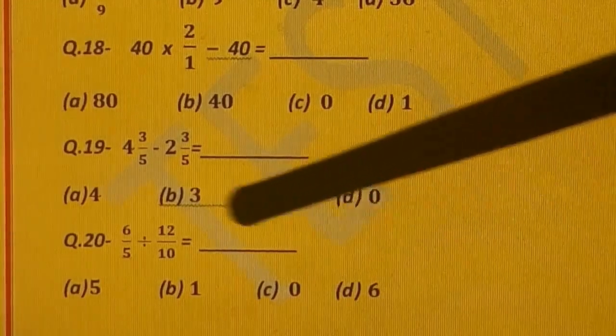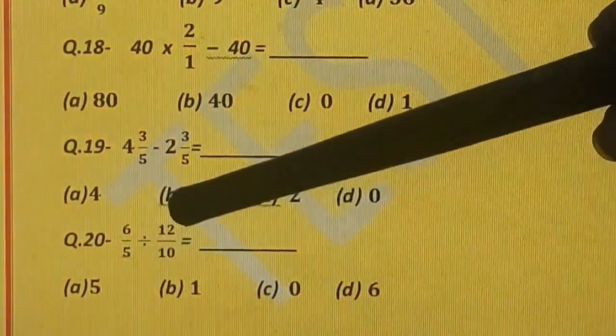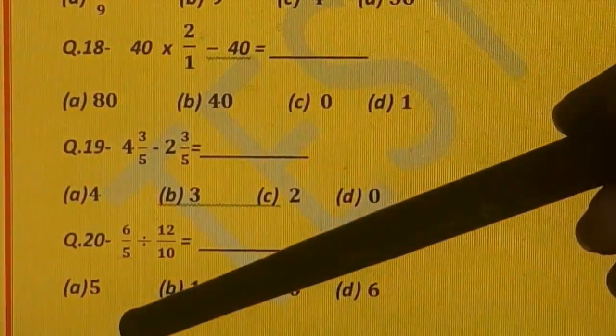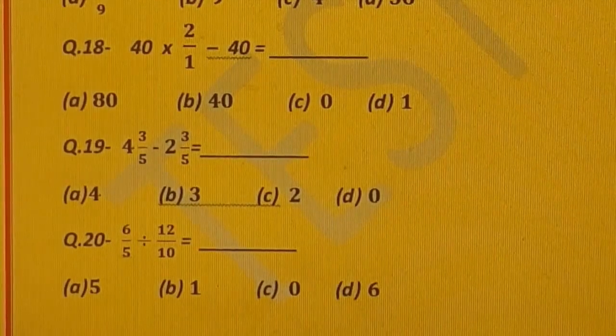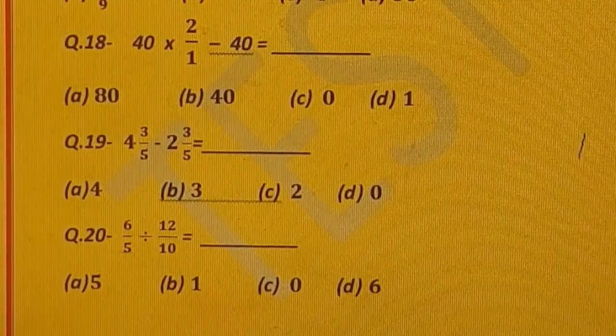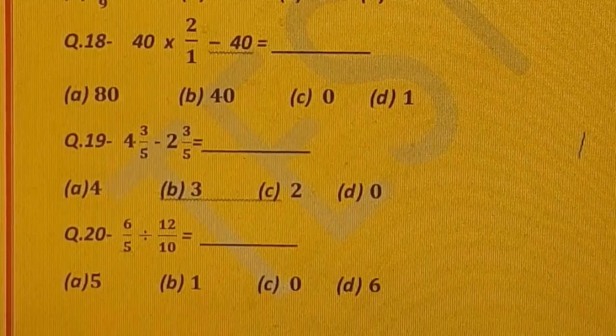And this is your last question, number 20. 6 upon 5 divided by 12 upon 10 is equal to dash. Options are: A) 5, B) 1, C) 0, and D) 6. You all have to submit your test solutions after completion by 12 pm. Best of luck.